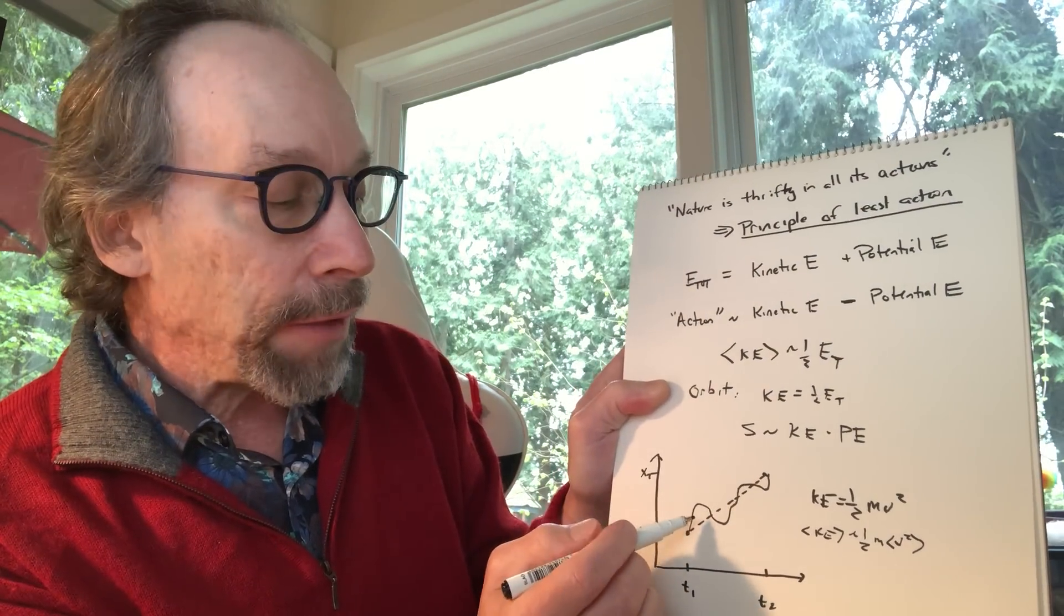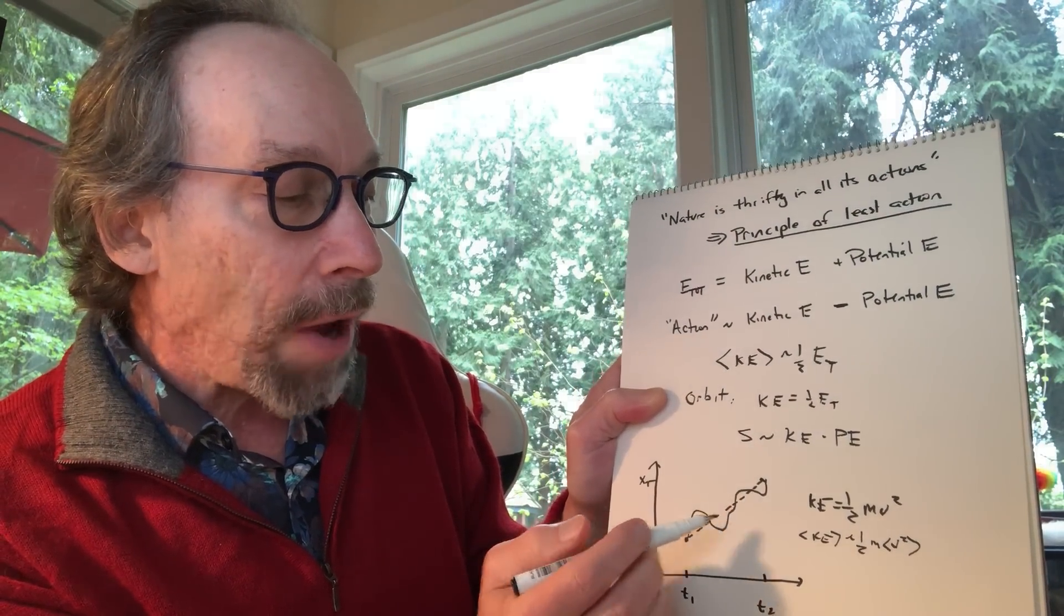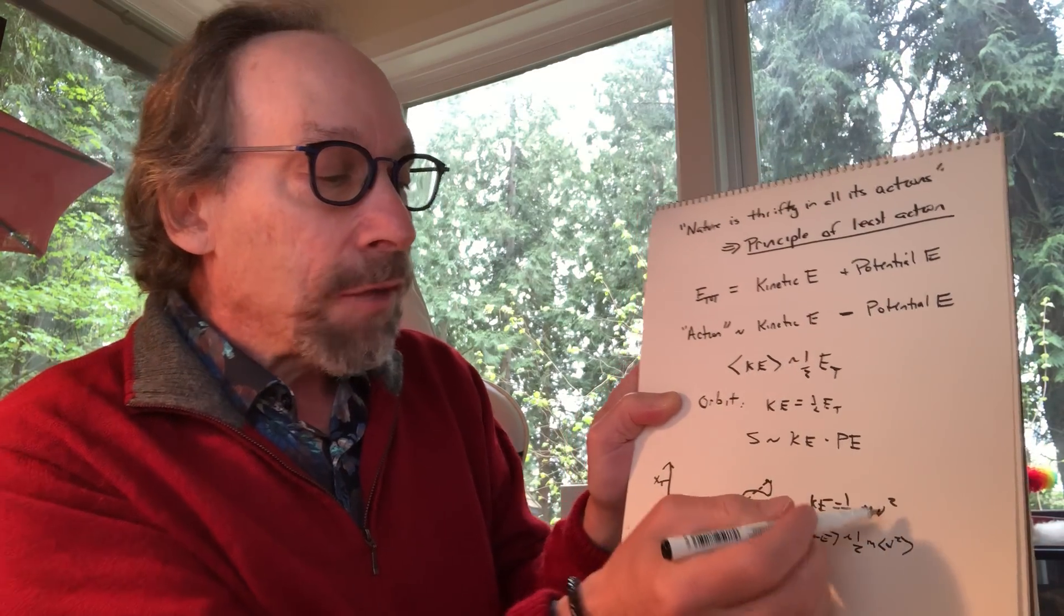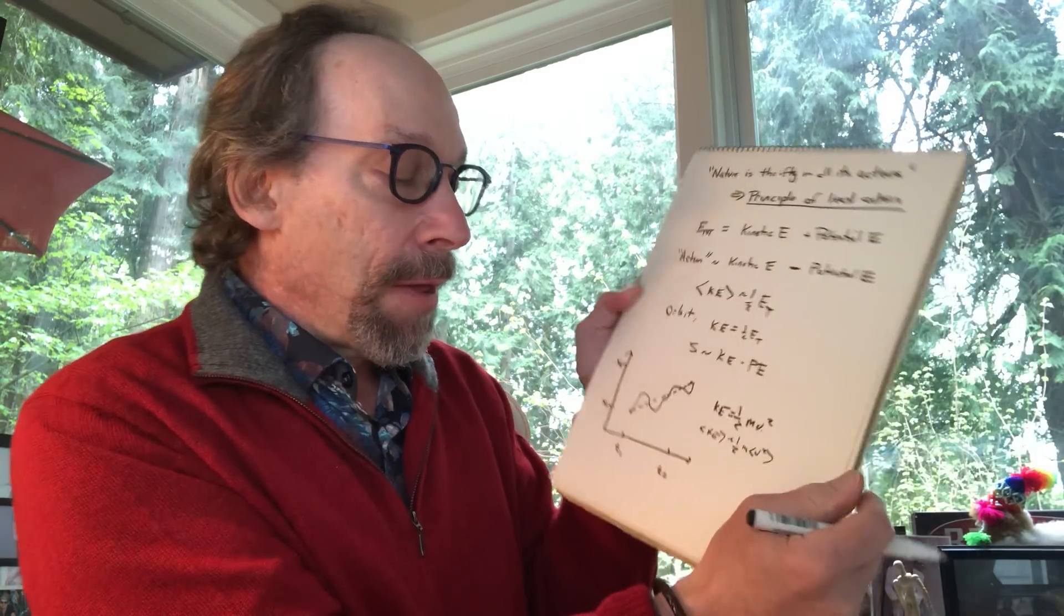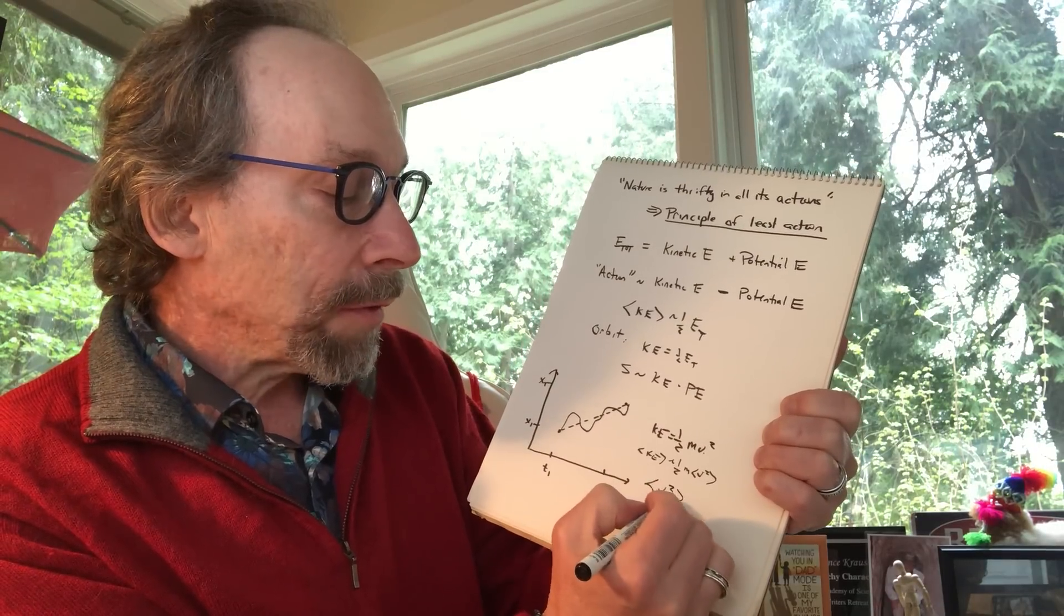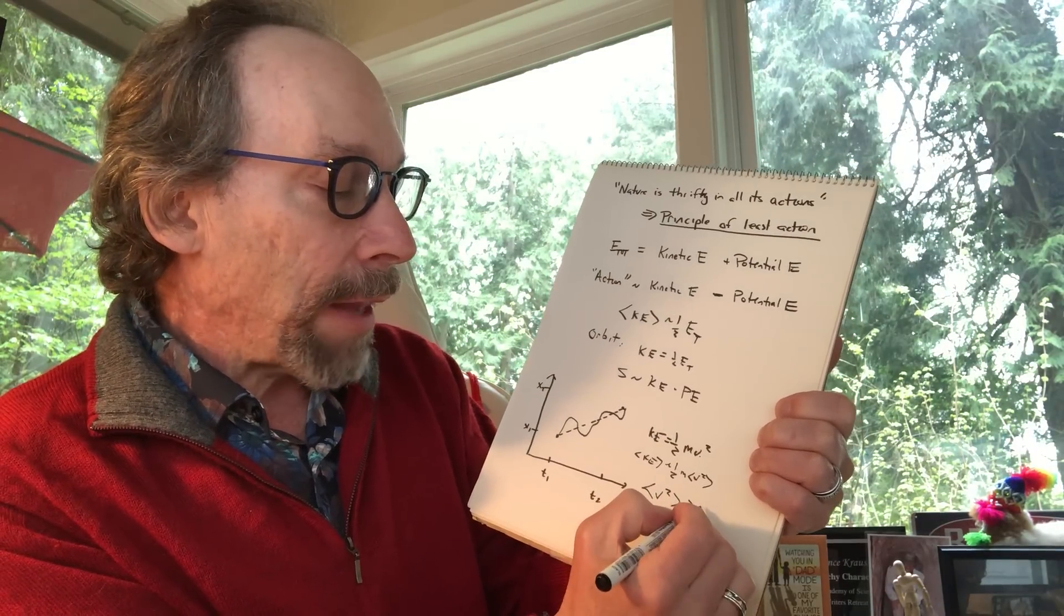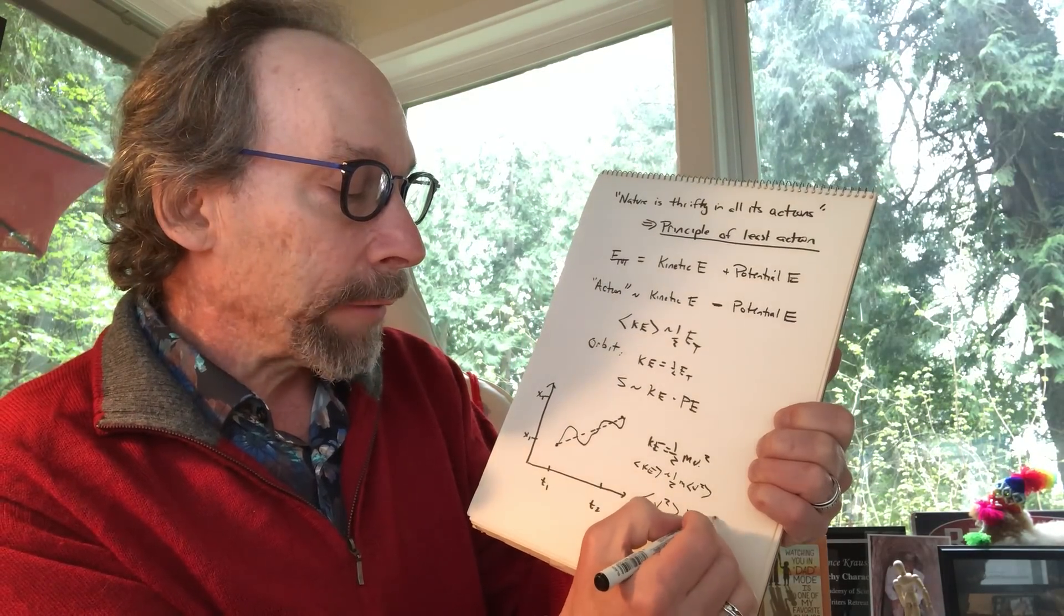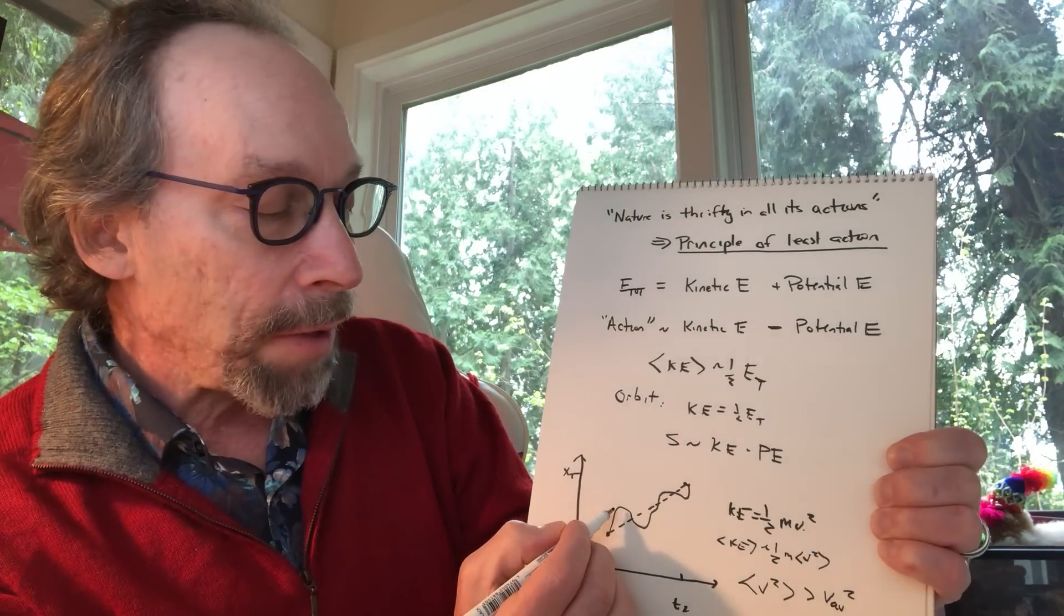But it turns out if you depart from a straight line, the average of v squared is always greater. Well, I'll write it down here. The average of v squared is always greater than v average squared because the departures, whenever the velocity is much larger, add a much bigger component.